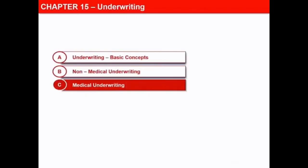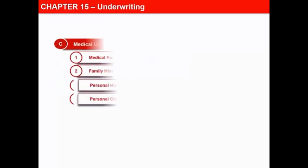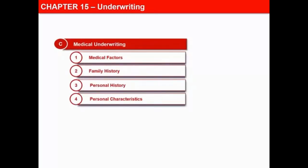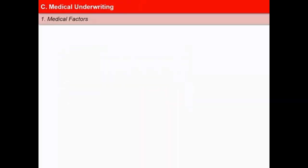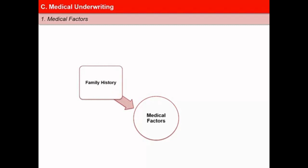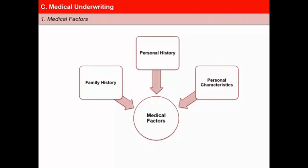In this next video of the lesson on Underwriting, we will learn about various aspects of medical underwriting. Let us now consider some of the medical factors that would influence an underwriter's decision. These are generally assessed through medical underwriting, often calling for a medical examiner's report. We will look at factors such as family history, personal history and personal characteristics.